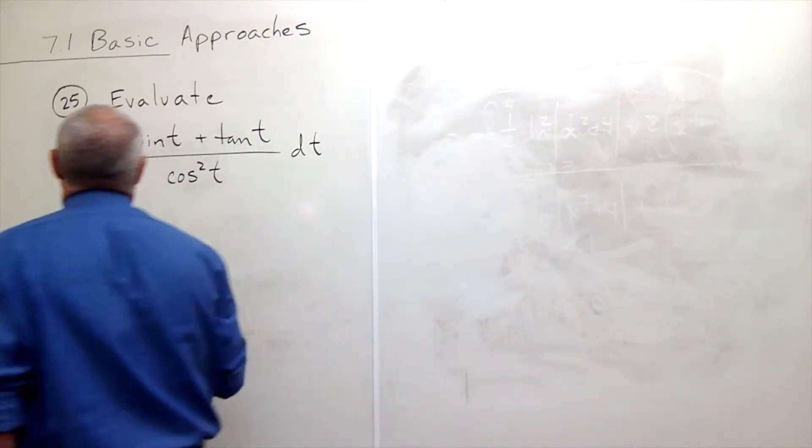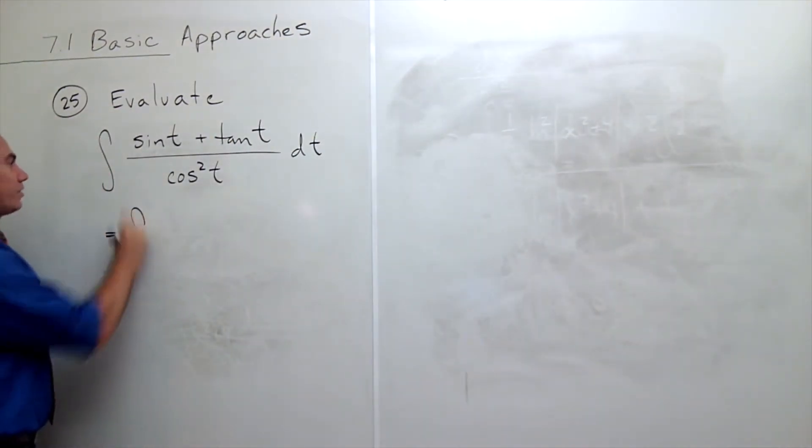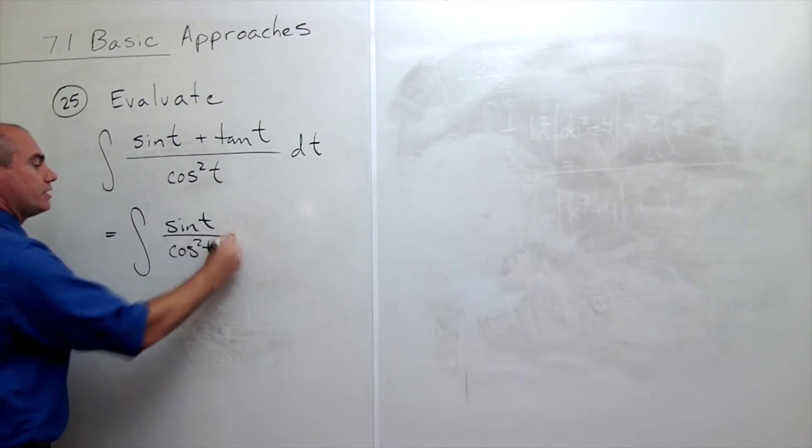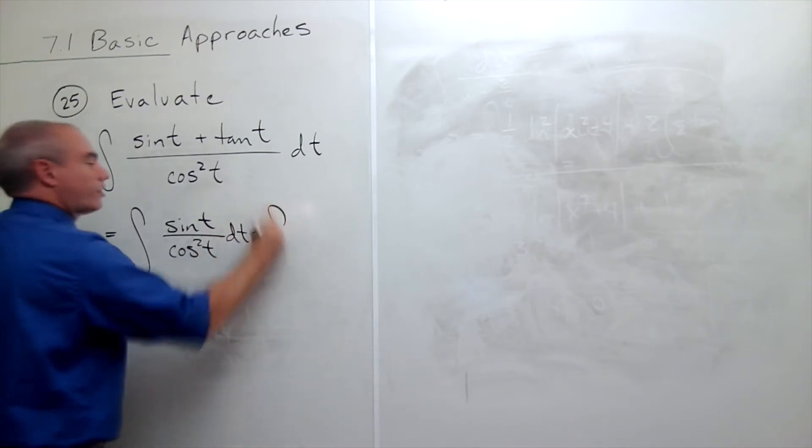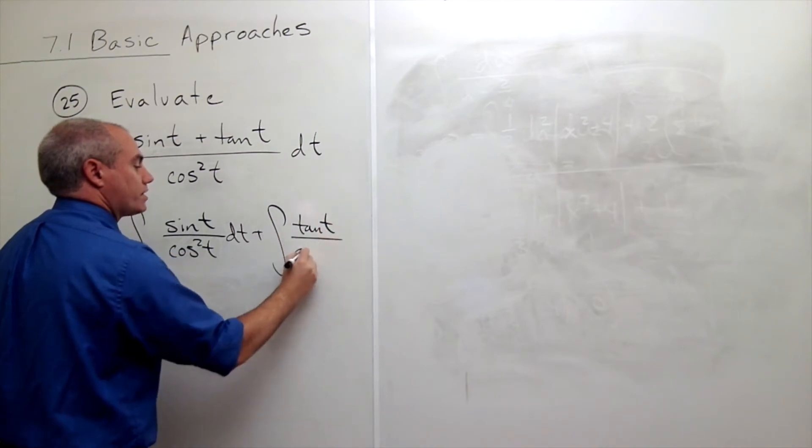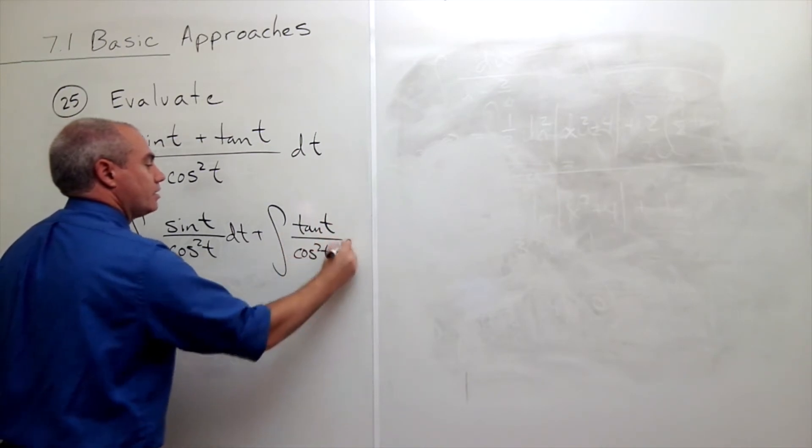I'm going to rewrite this thing. Integral of sine t over cosine squared t dt plus integral of tangent t over cosine squared t dt.